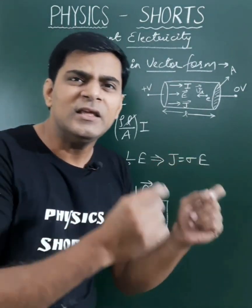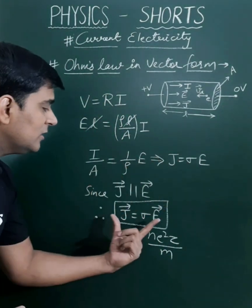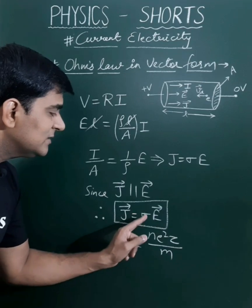Always J vector and E vector are parallel or in the same direction. That's why we can write this expression in vector form as J vector equals σE vector.